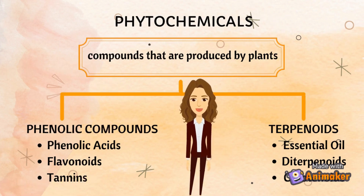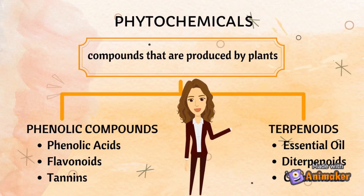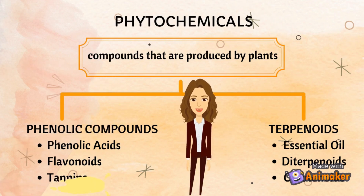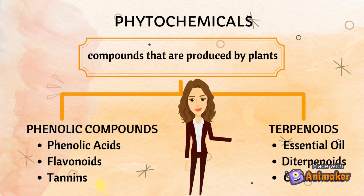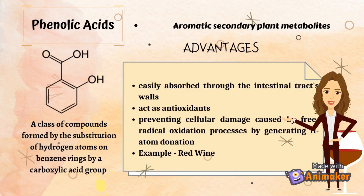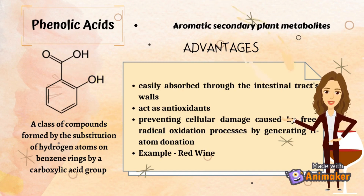First, phenolic compounds are then classified into phenolic acids, flavonoids, and tannins. Whereas terpenoids are then classified into essential oils, diterpenoids, and carotenoids. The first type of phenolic compounds is phenolic acid. Phenolic acid is a class of compounds formed by the substitution of hydrogen atoms on benzene rings. Phenolic acids are easily absorbed through the intestinal tract walls and may benefit your health because they act as antioxidants, preventing cellular damage caused by free radical oxidation. For instance, phenolic compounds are abundant in red wine.